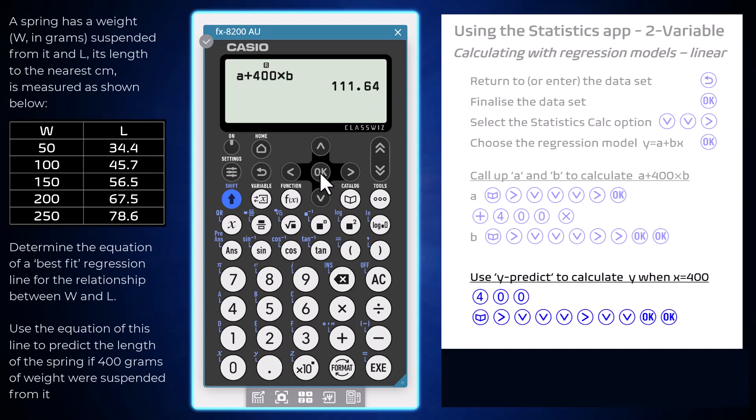To use this command, enter the x-value, i.e. 400, and then locate y-hat by pressing Catalog, then choosing Statistics and Regression as before.